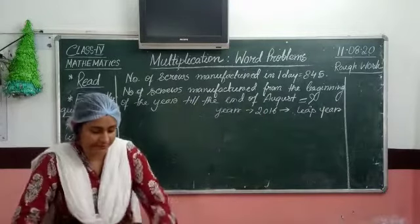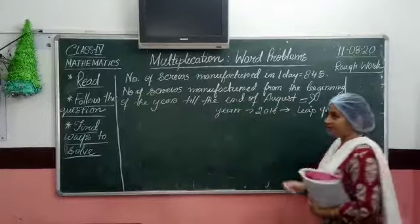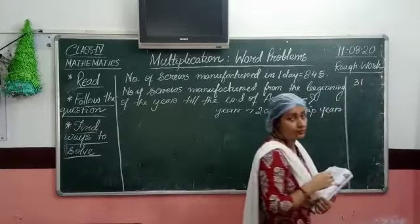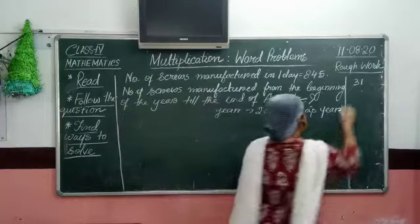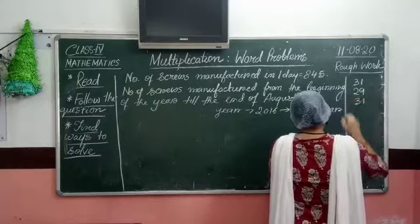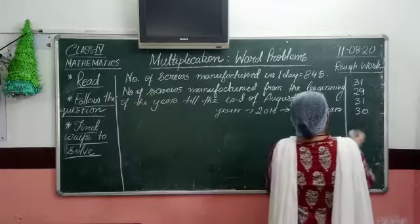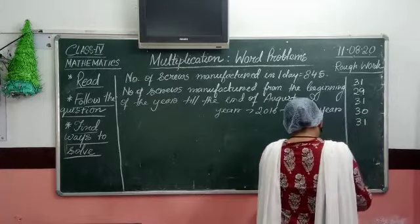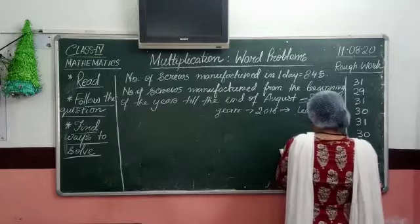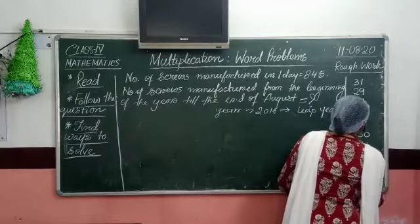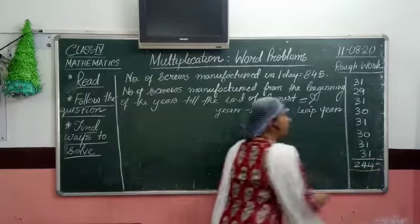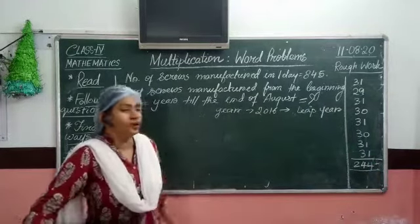Now let us add the number of days. We started from the beginning of the year, so the first month is January with 31 days. February had 29 days since it was a leap year. March had 31 days. April had 30 days. May had 31 days. June had 30 days. July had 31 days. And August had 31 days. If you add them all up, it gives you 244 days. So you have to find out how many screws were made in 244 days.